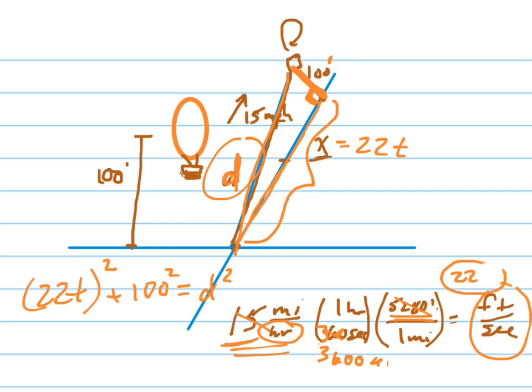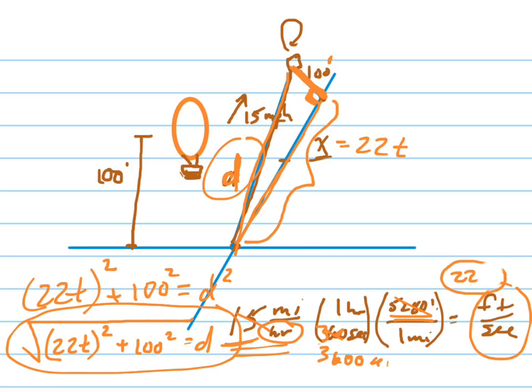So the distance is, you can clean this up if you want to, but basically it's the square root of 22t squared plus 100 squared. That's the distance that the balloon is away from the intersection at any given point, because it's 100 feet up in the air.